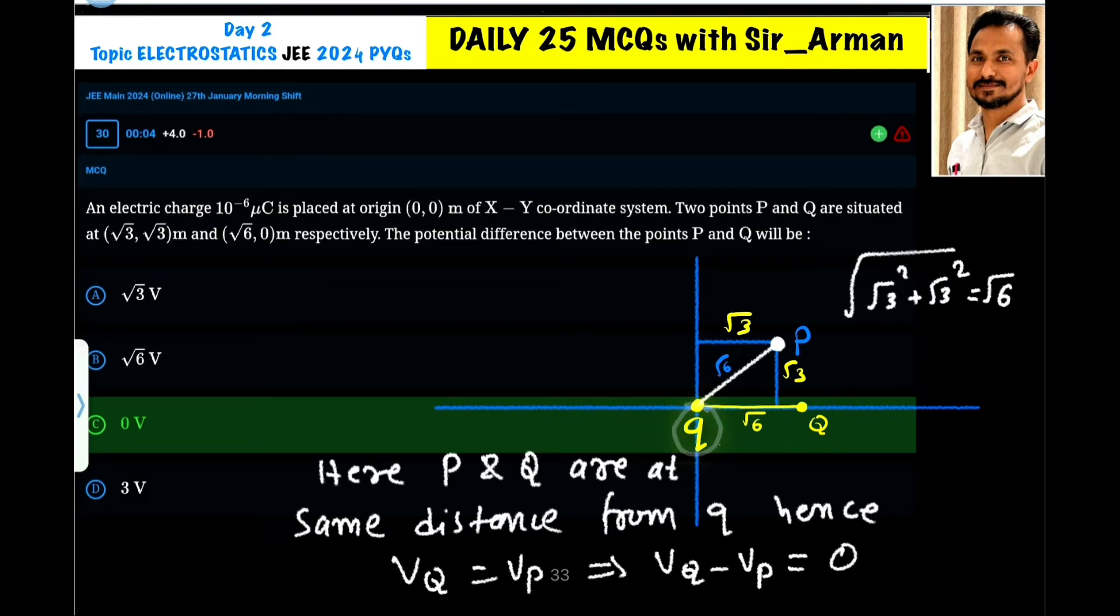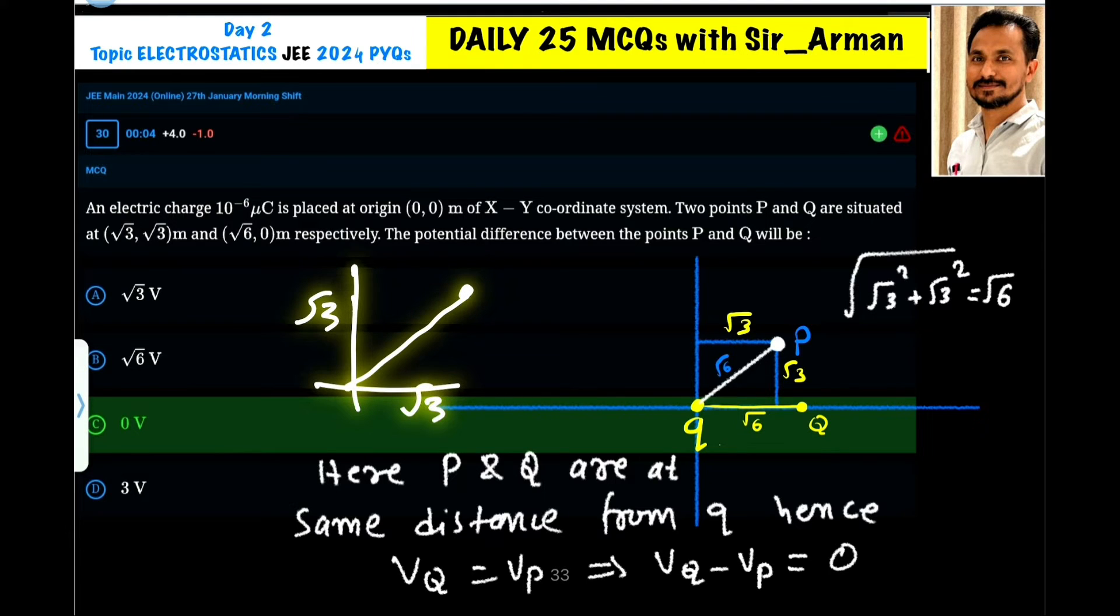The charge q of 10^(-6) microcoulomb is at the origin. Point P has coordinates (√3, √3), so the x-coordinate is √3 and the y-coordinate is also √3. To find the total distance from the center, we see the y-coordinate is √3 and x-coordinate is √3.